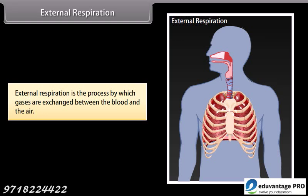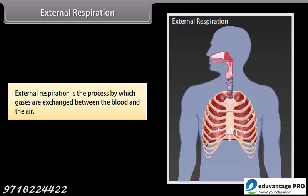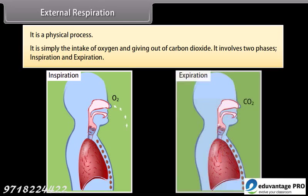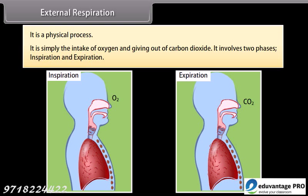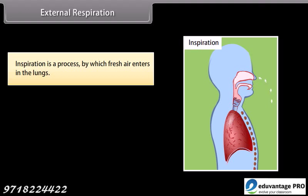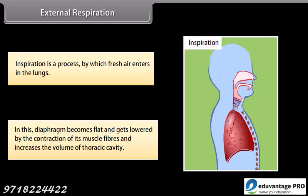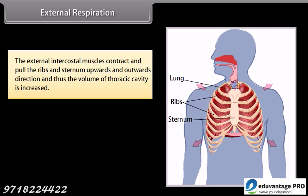External respiration is the process by which gases are exchanged between the blood and the air. It is a physical process — simply the intake of oxygen and giving out of carbon dioxide. It involves two phases: inspiration and expiration. Inspiration is the process by which fresh air enters the lungs; the diaphragm becomes flat and is lowered by contraction of its muscle fibers, increasing the volume of the thoracic cavity. The external intercostal muscles contract and pull the ribs and sternum upwards and outwards, further increasing the volume of the thoracic cavity.